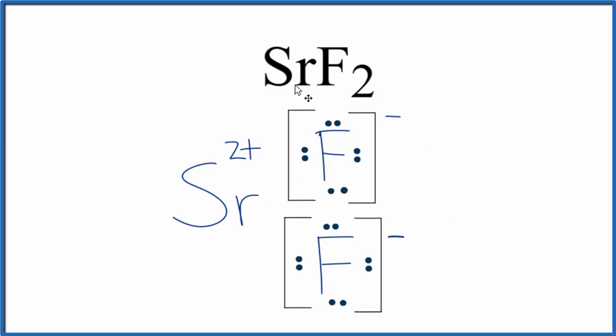So this is the Lewis structure for SrF2, strontium fluoride. Because we have this positive and these negatives, they are attracted to each other, and these ions that are attracted form an ionic bond.